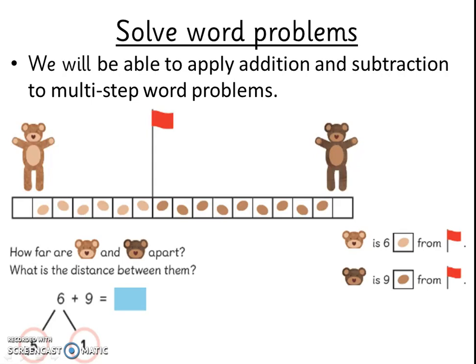Finally, we will use all the learning we have done to work out addition and subtraction multi-step problems. Here, to find the distance between the two bears, we will use more than one step to work it out. First, we will count how many steps the light brown bear is from the flag: one, two, three, four, five, six. The light brown bear is six steps away from the flag.